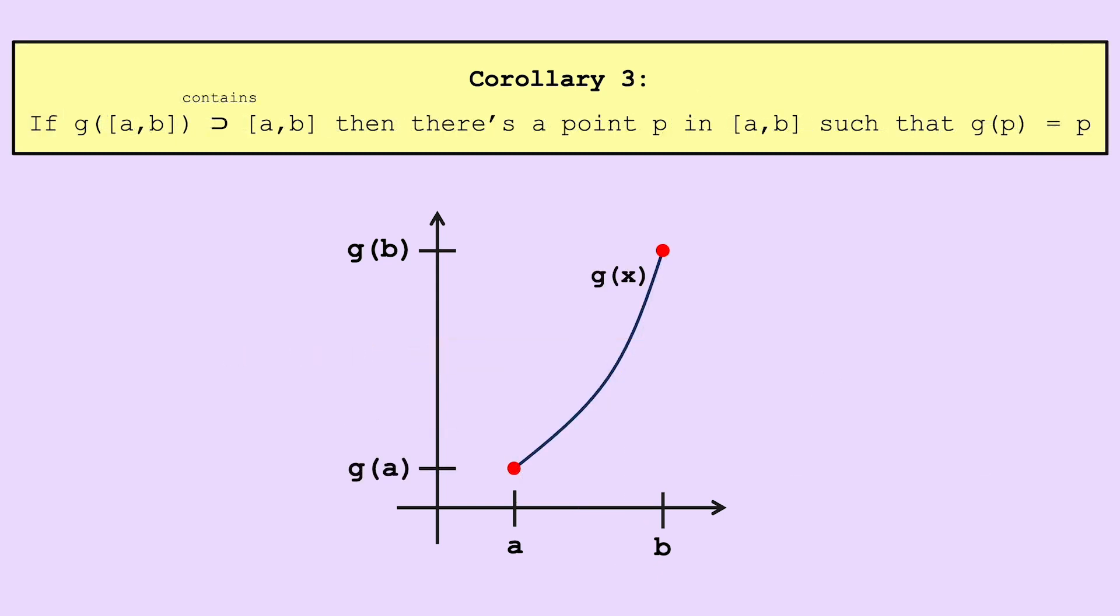Finally, our third corollary. Let's say we have a function such that g of ab contains the interval ab. Then we can know there is some point in g where g of that point is equal to itself, also known as a fixed point. Visually, a fixed point would mean the line y equal to x must cross g, which we can see should be true, but recognizing how the intermediate value theorem implies this might not be quite as intuitive.